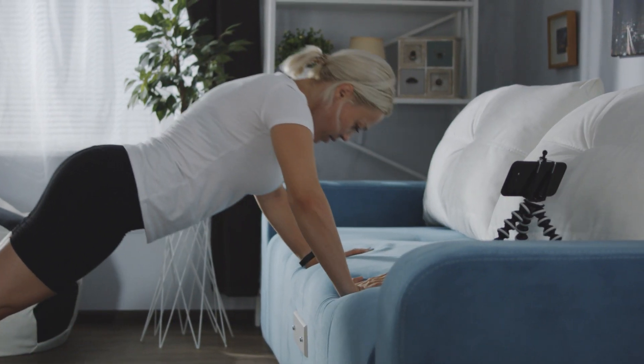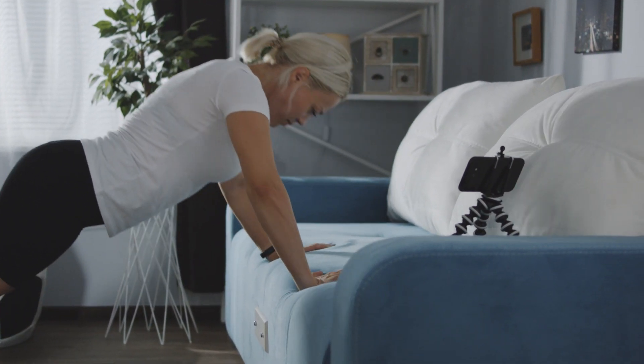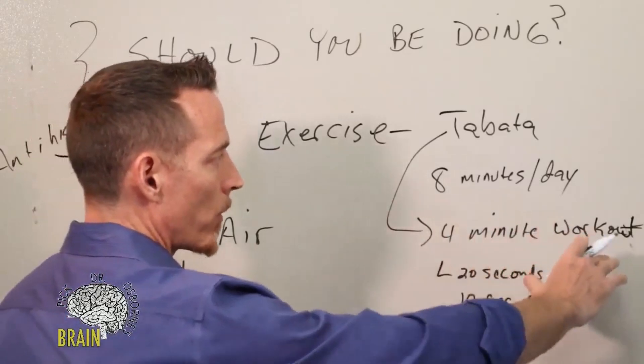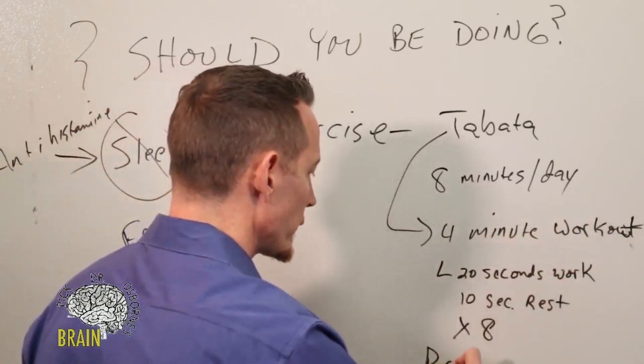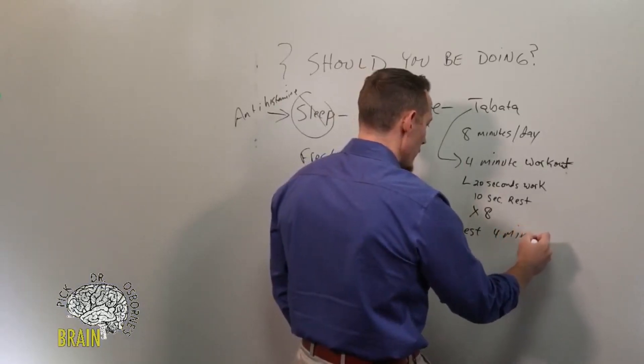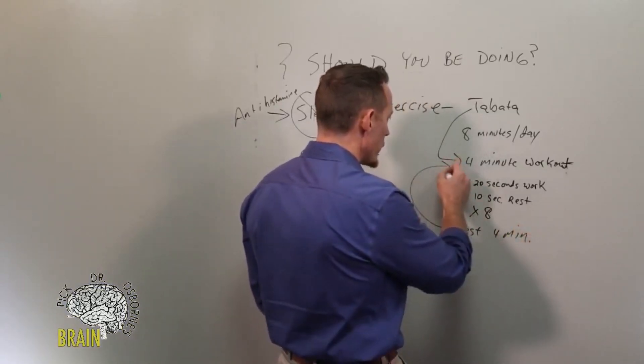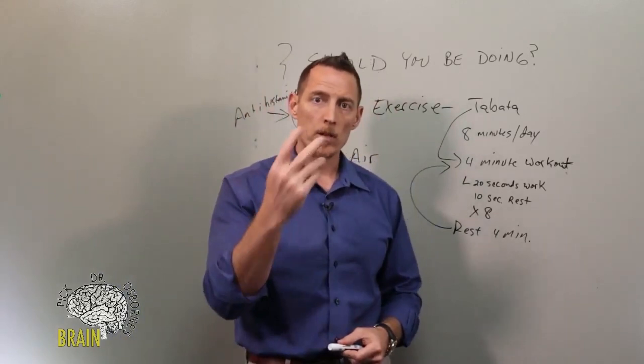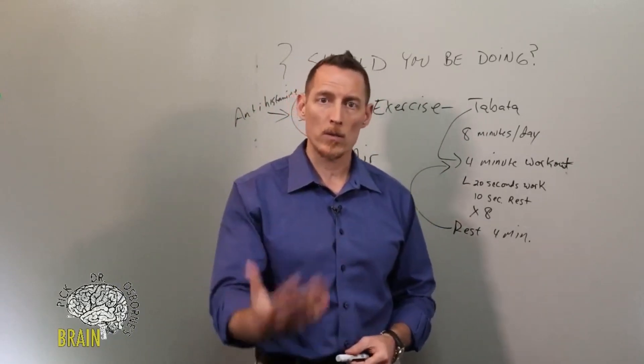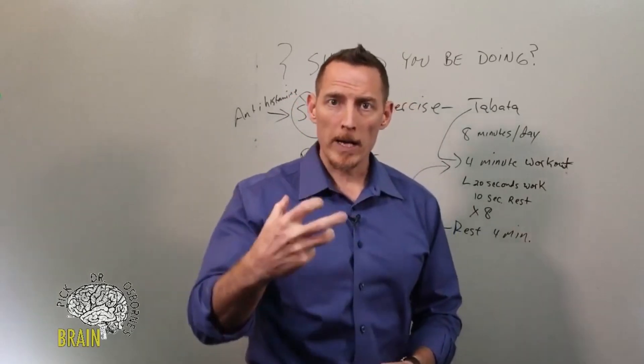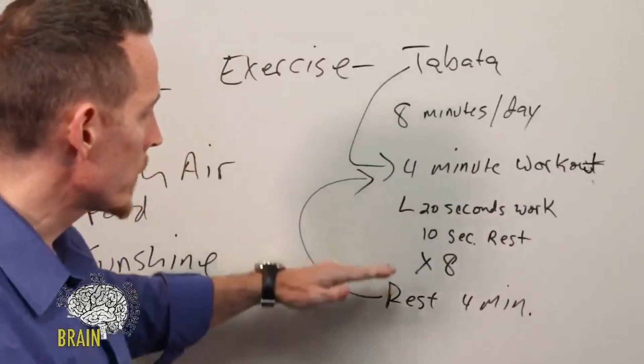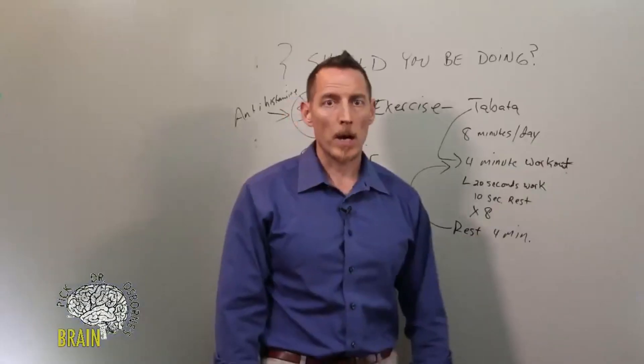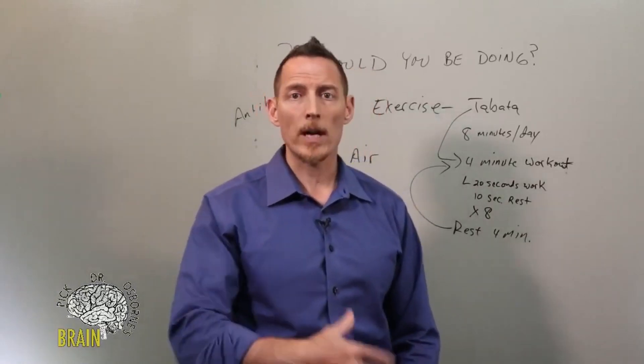But Tabata can be done at home. You can do a four-minute workout, 20 seconds of work, 10 seconds of rest, eight rounds and you're done. After four minutes, you're done. Then you rest four minutes. Then you pick one more exercise and repeat. If you really want to kind of get balanced about it, you can do this four days a week. You don't even have to do this seven days a week. But when you do it, pick an upper body activity and then pick a lower body activity. So if you're doing two of these Tabatas four times a week, you're working your lower body in one aspect, you're working your upper body in another aspect. And this is all you really need to keep yourself healthy without a gym.